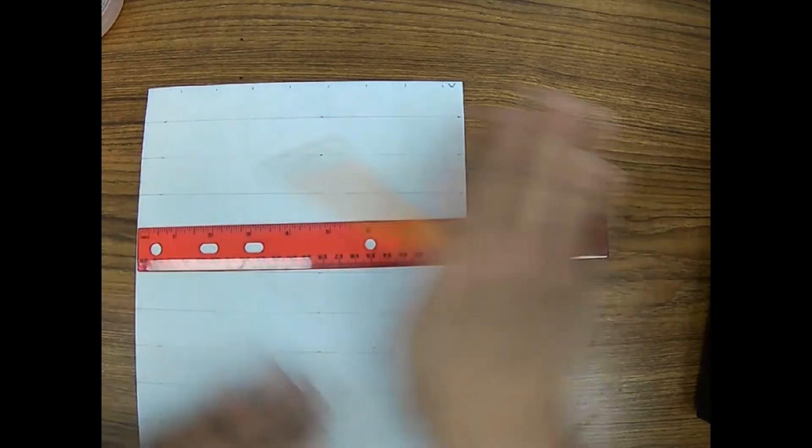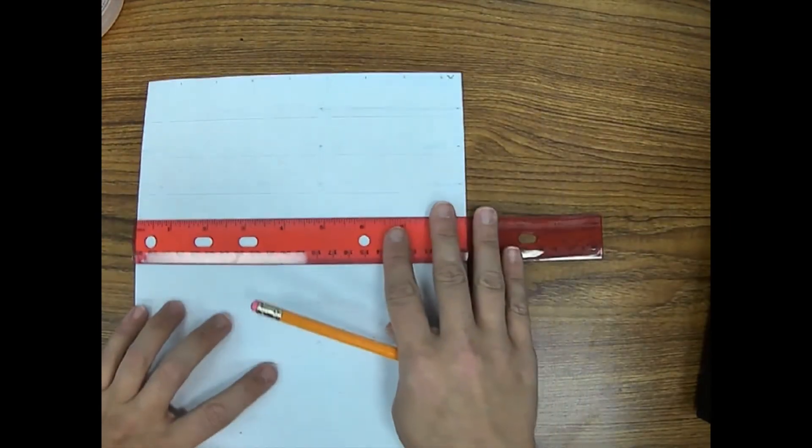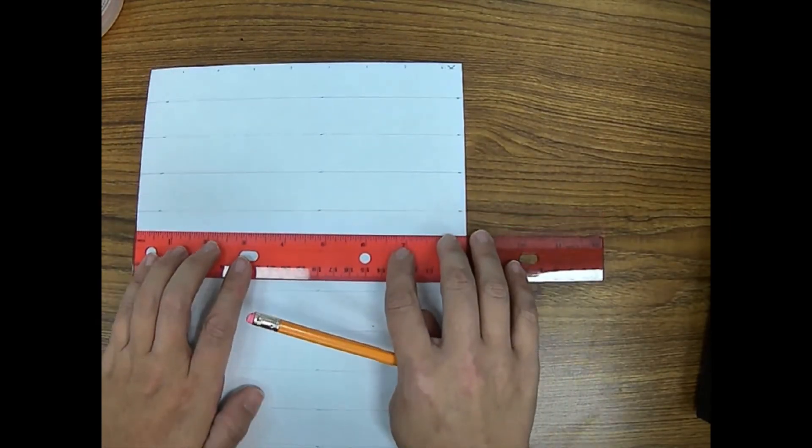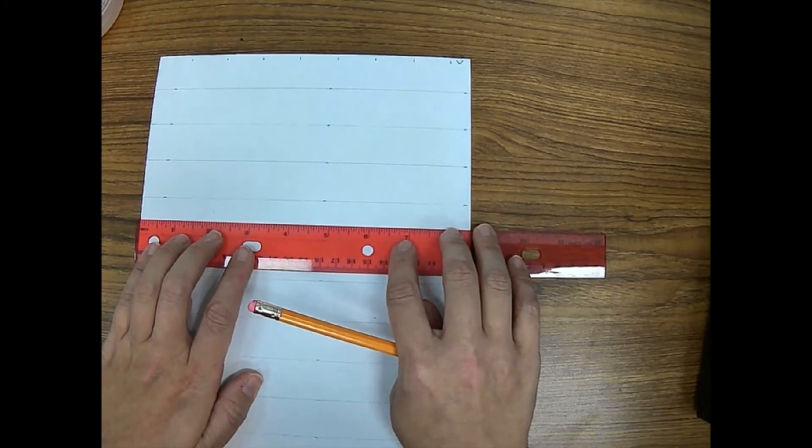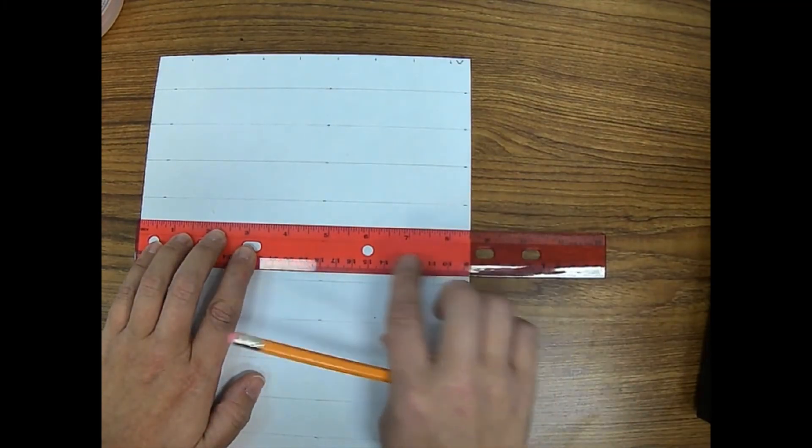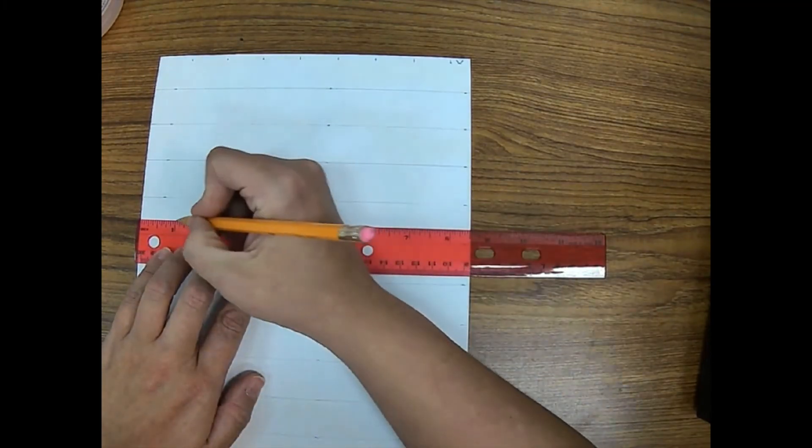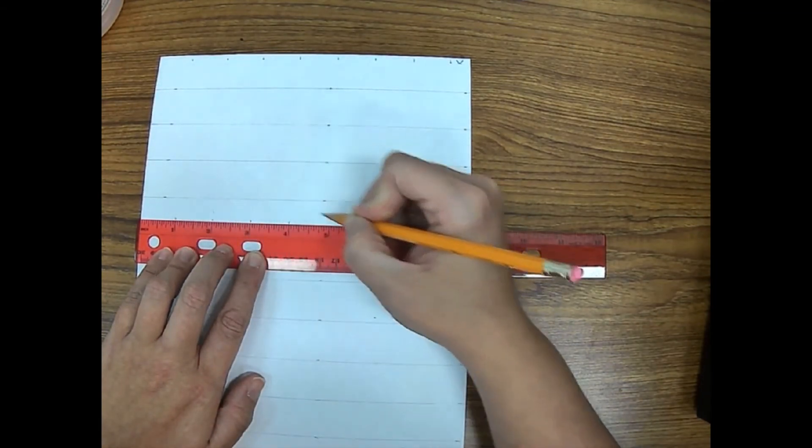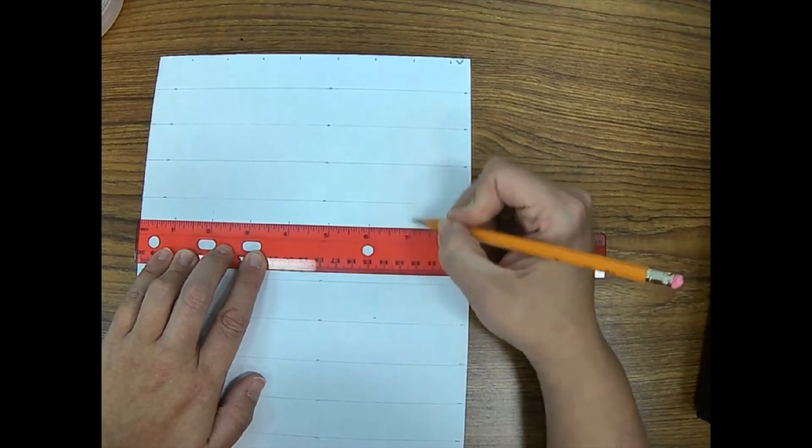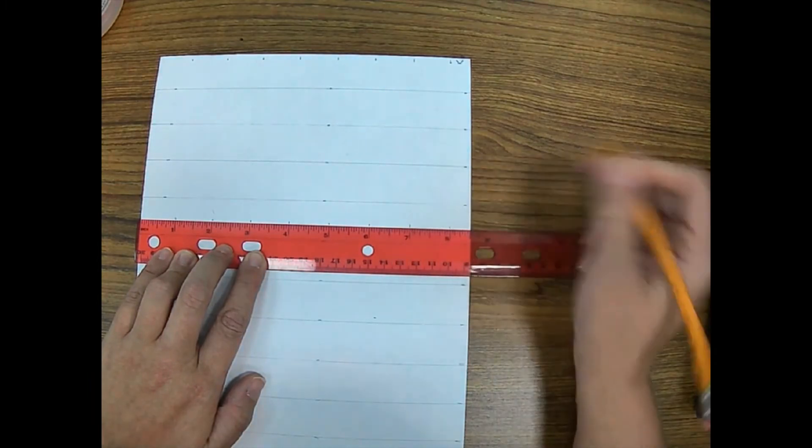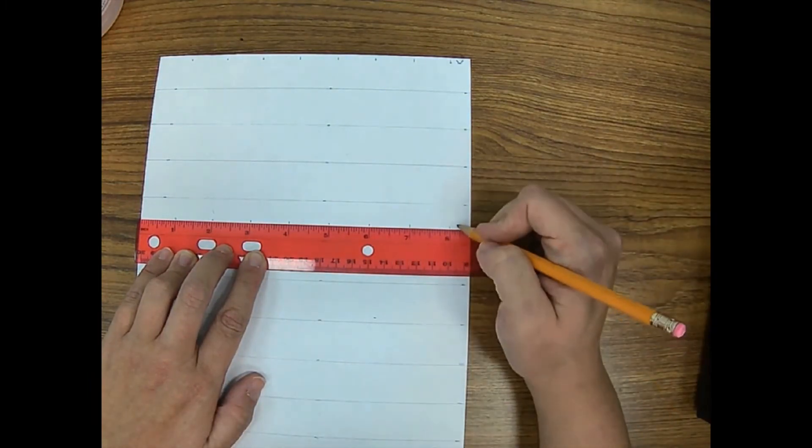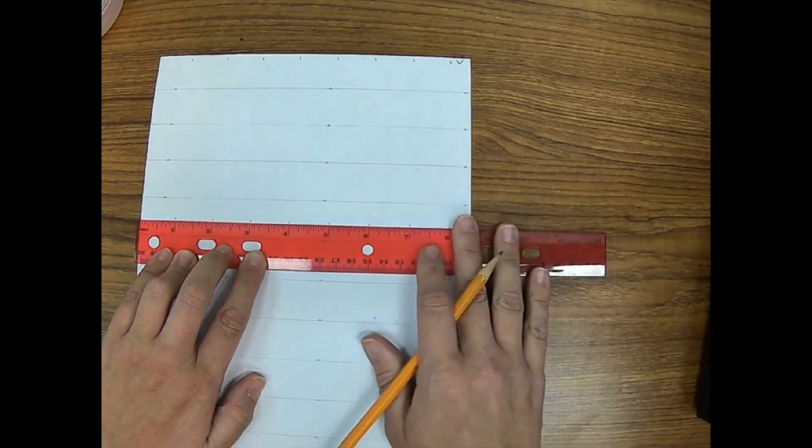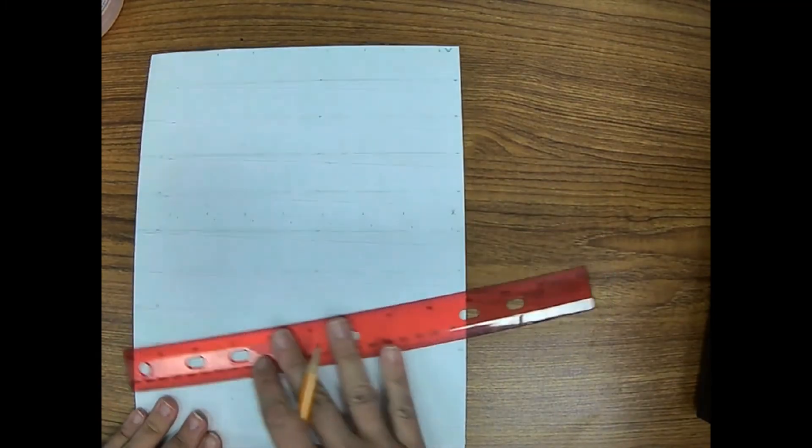We're going to slide our ruler down again. Remember, we're not turning the paper. We're not turning the ruler. We're sliding the ruler down. It's about halfway. Then we are going to do it again. One little dot every inch. And again, a little half inch we're not using. I'm going to just throw an X there so I know that I'm not using it.